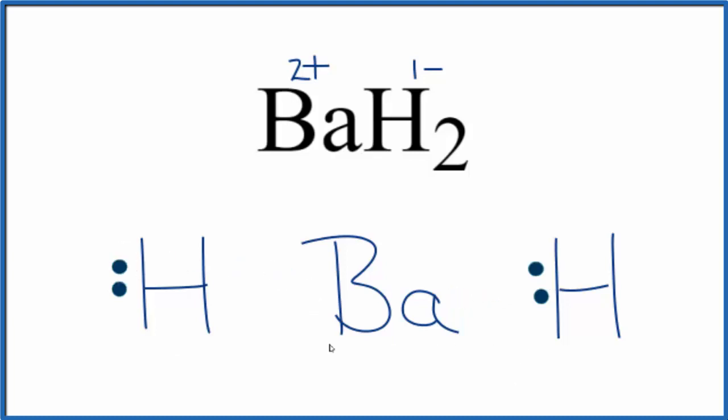Now each hydrogen's gained one electron, so it's going to have a negative charge, negative one charge. The barium lost two electrons, so it'll be two-plus.